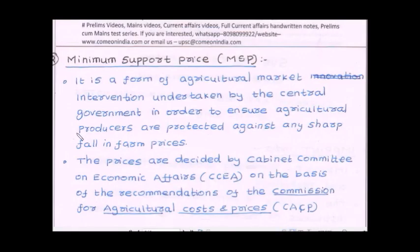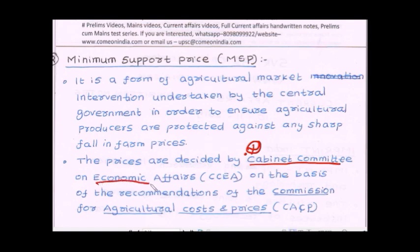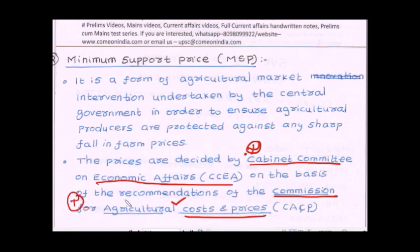Here an important question emerges: who decides the minimum support price? This is an important prelims point. It is decided by the Cabinet Committee on Economic Affairs, on the basis of recommendations of a commission called the Commission for Agricultural Cost and Prices — another important prelims point.